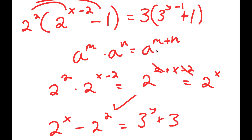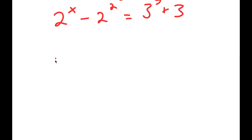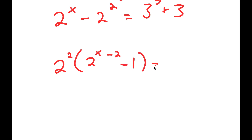Going back and rewriting this, I have 2 squared times the quantity 2 to the power of x minus 2 minus 1, is equal to 3 times the quantity 1 plus 3 to the power of y minus 1.